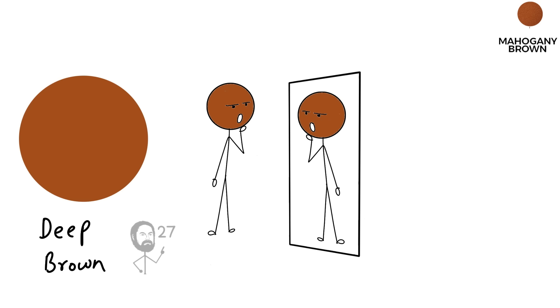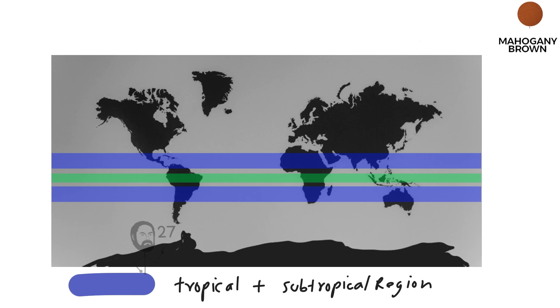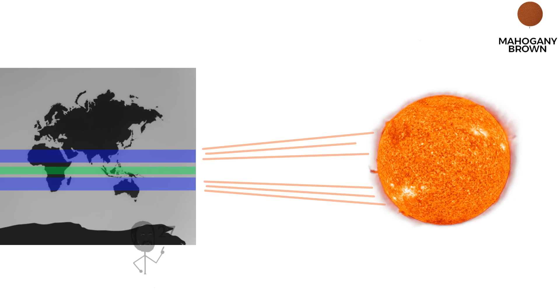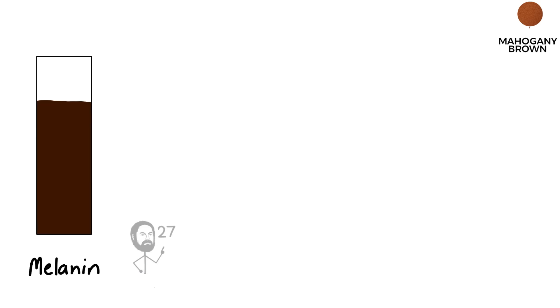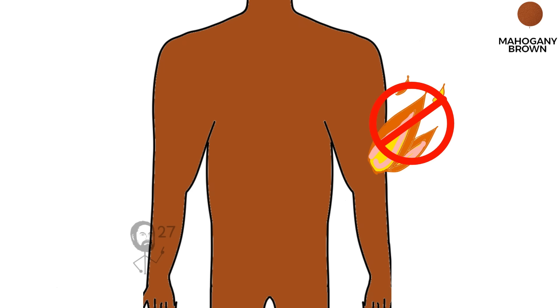Mahogany Brown Skin. This tone reflects a deep brown shade with noticeable reddish or copper undertones. It evolved in populations living in tropical and subtropical zones, where sunlight is still intense, but not as extreme as directly along the equator. The amount of melanin here is high enough to defend the skin from harmful ultraviolet rays, preventing rapid burning and lowering the risk of long-term damage.